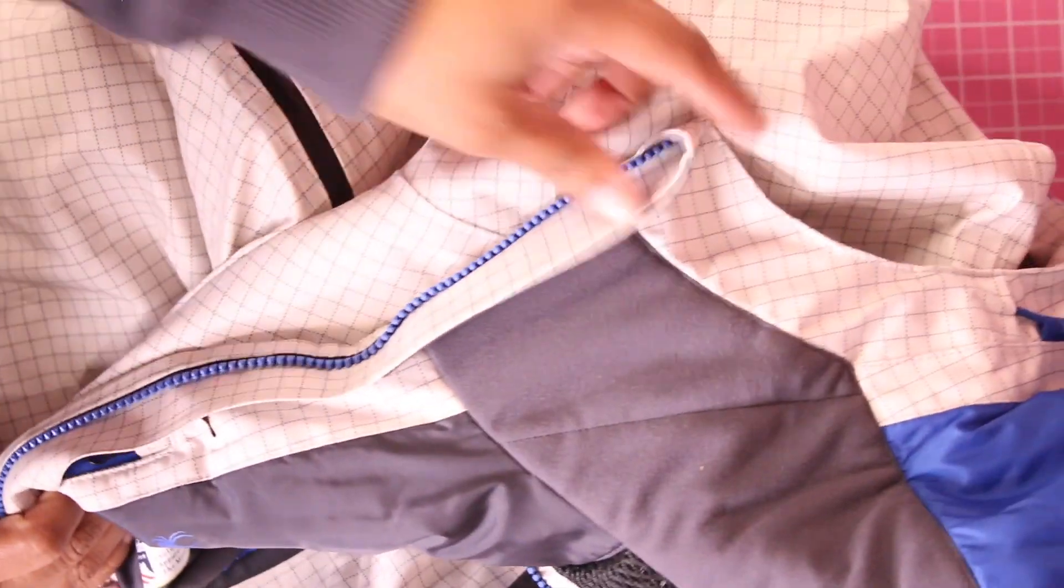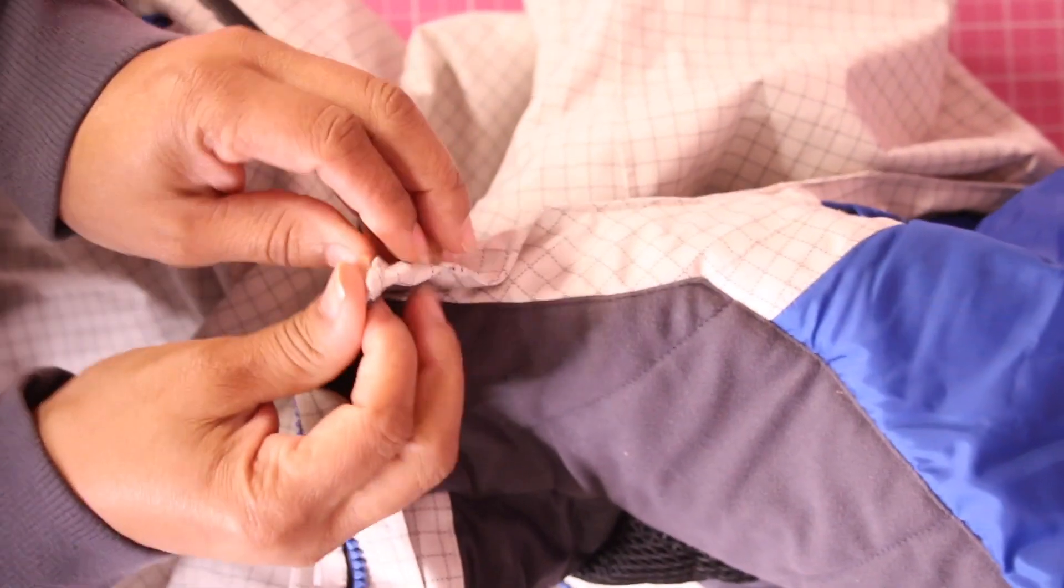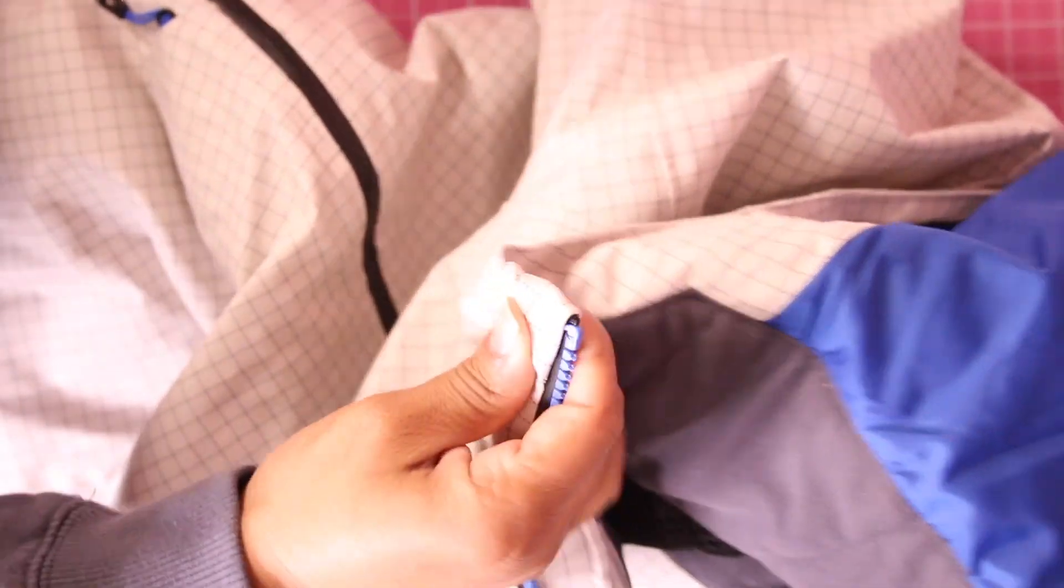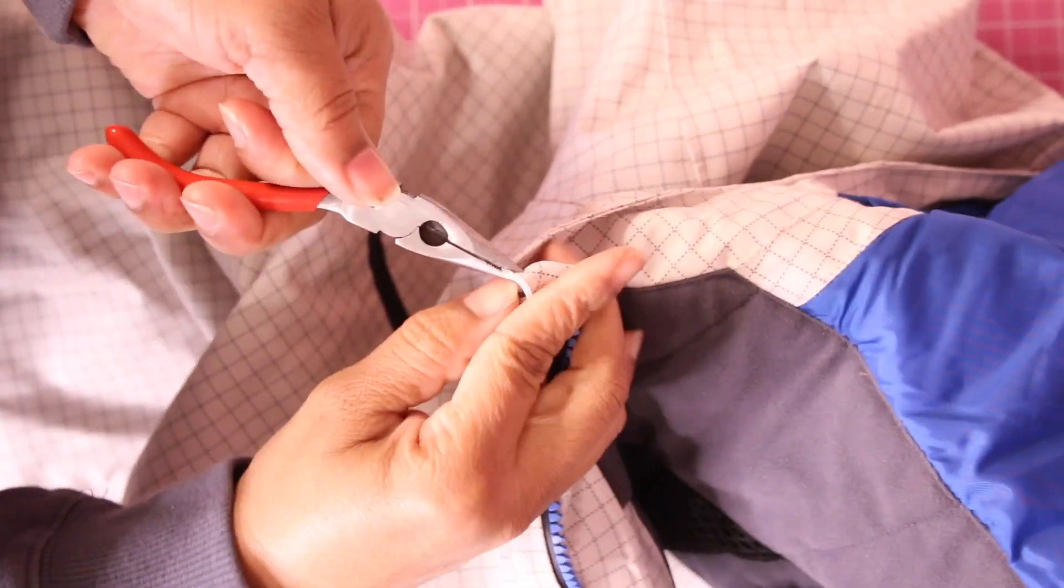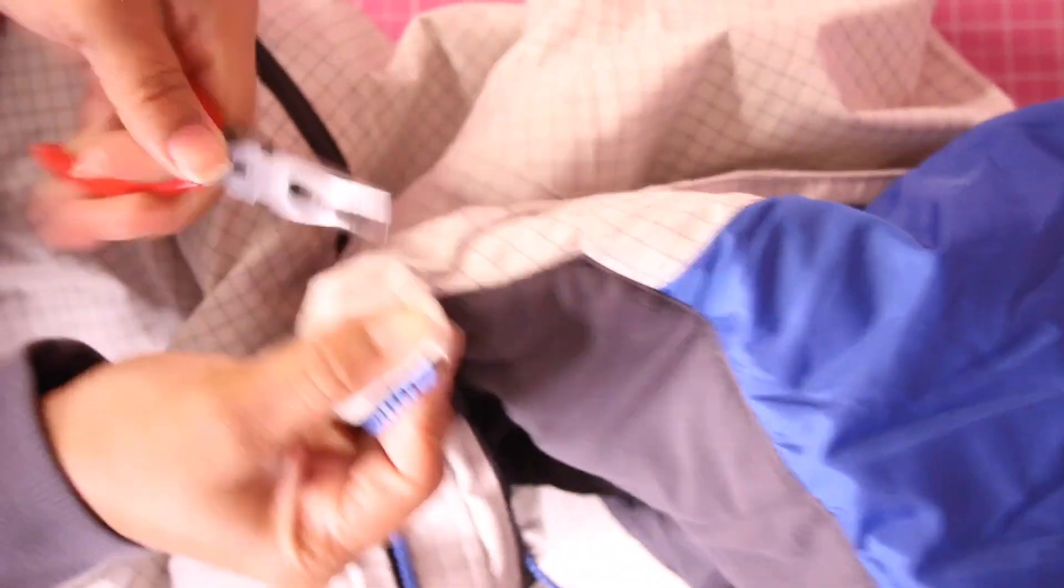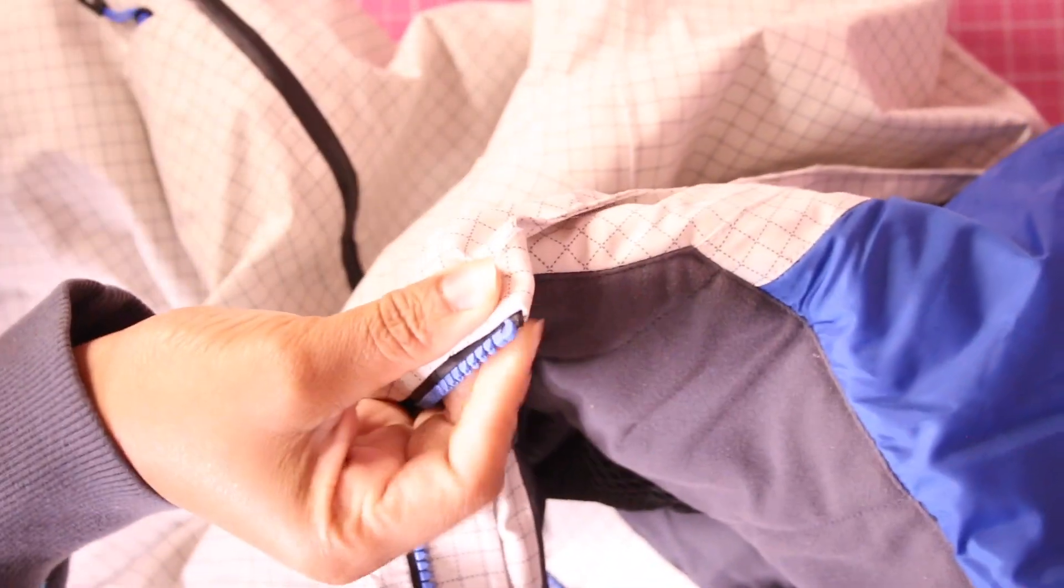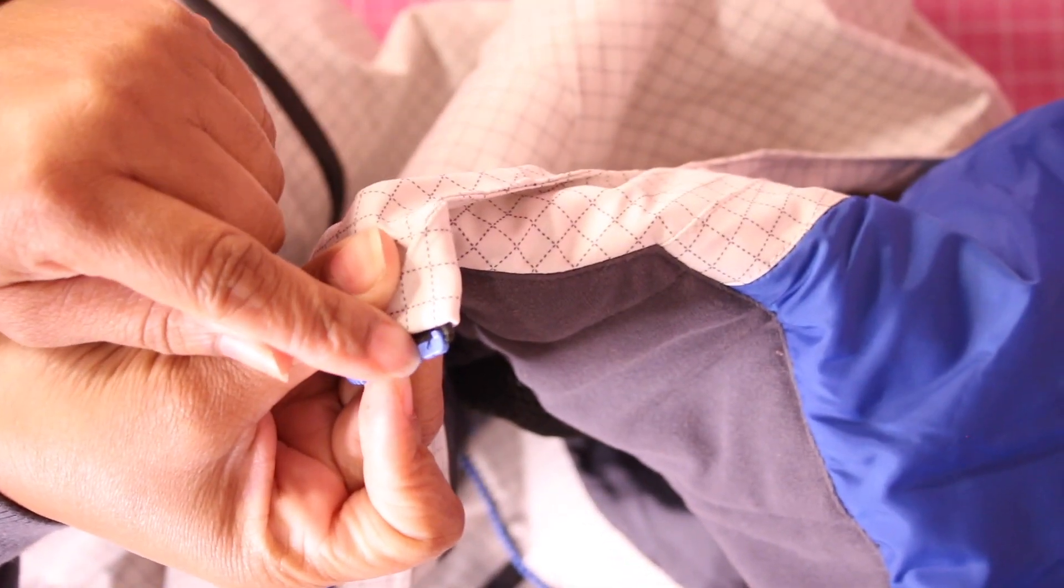Let's go ahead and get started. So the first thing you want to do is pull your flap back. You're going to take your needle nose and you're going to pull this all the way back so that you're going to expose your zipper top stops. As you can see, this is your little top stop.